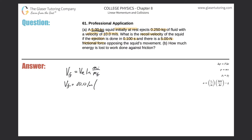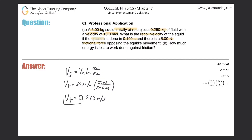The ejection velocity is 10 meters per second. The squid started at 5 kilograms and ejects 0.25 kilograms, so the final mass is 5 minus 0.25 = 4.75 kilograms. This gives us 10 times the natural log of 5 divided by 4.75.